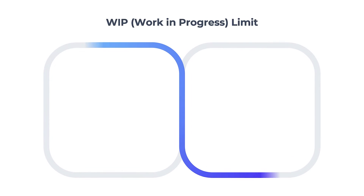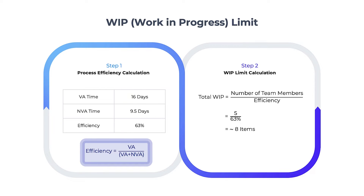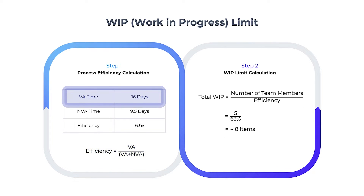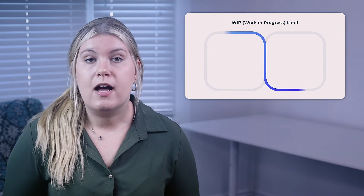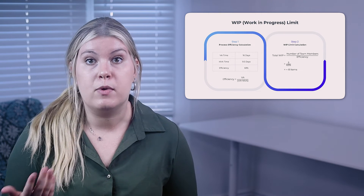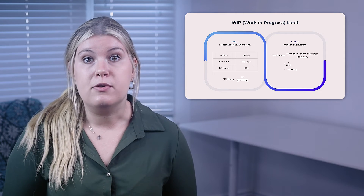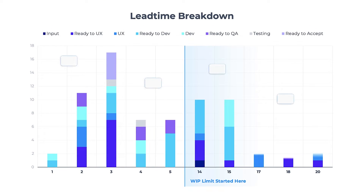The way to get around that is through a simple calculation called the work-in-progress limit. First, calculate process efficiency by dividing the time spent on value-adding tasks by the overall time spent on tasks. Then divide the total number of team members by that efficiency, and you'll get the maximum number of tasks that should be in progress. A perfect use for this is a customer service response queue, where it's almost impossible to plan what kind of calls will come in. However, you can make some general assumptions to plan capacity to meet that demand. Here, we can see just how impactful that work-in-progress limit is.